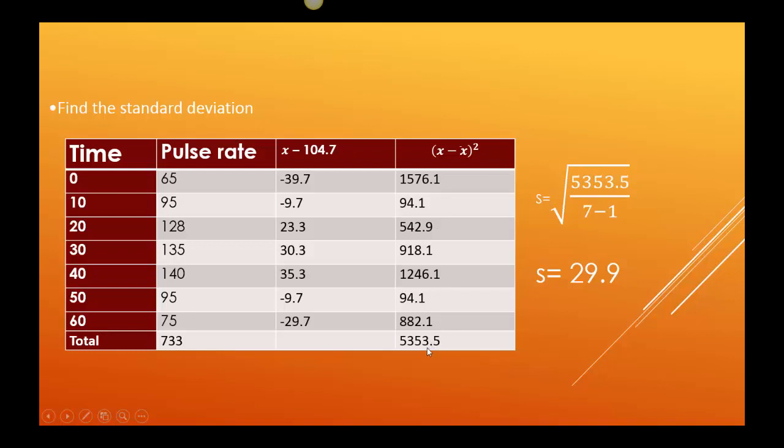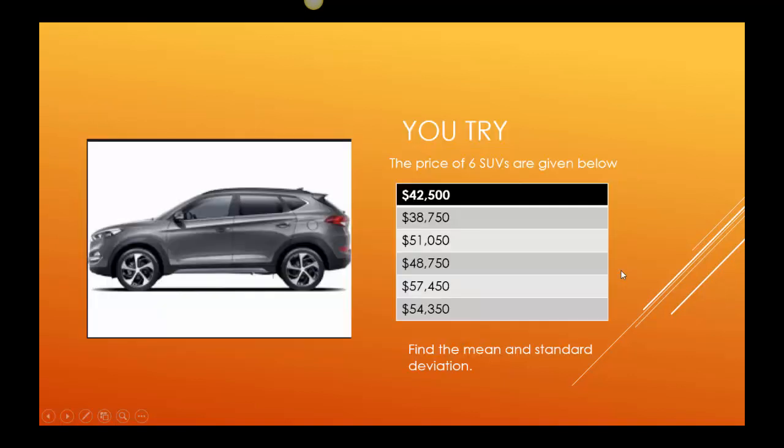So when I added them, I got 5,353.5. It's always over N minus one. So we said we had seven different times that we took the pulse rate. I subtract one is six. I'm going to do 5,353.5 divided by six. Take the square root. I got 29.9.